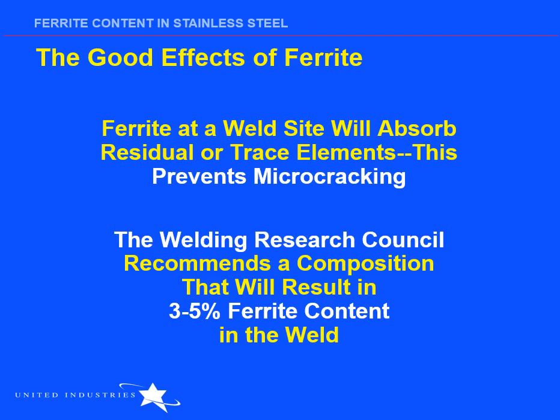Like most things in life, the presence of ferrite in a weldment has some good value and some not so good value. On the good side, ferrite will tend to absorb undesirable contaminants like sulfur that promote hot cracking during solidification. Some sulfur is good for ensuring full penetration, while too much can result in increased fluidity of the weld puddle during solidification, resulting in cracks as the mushy metal contracts with decreasing temperature. The Welding Research Council recommends that a chemical composition resulting in a calculated ferrite content of 3–5% be used to optimize the balance between penetration and hot cracking.